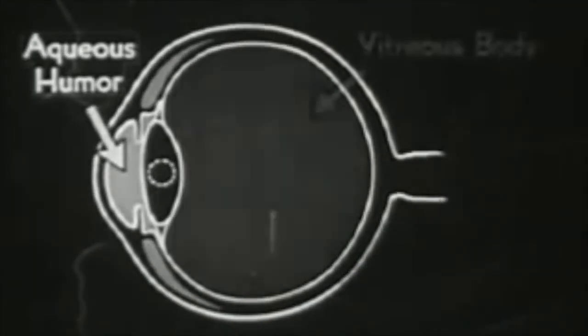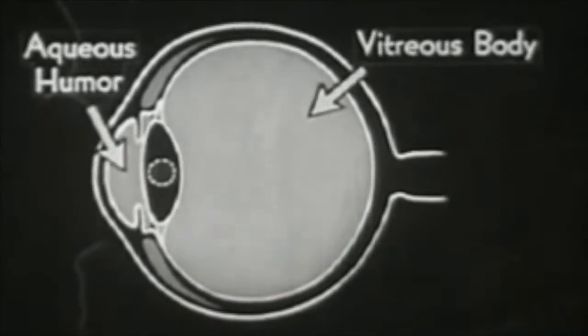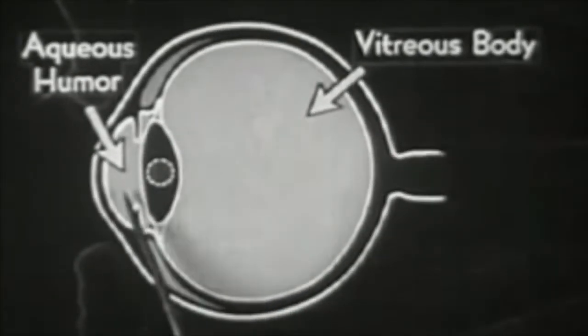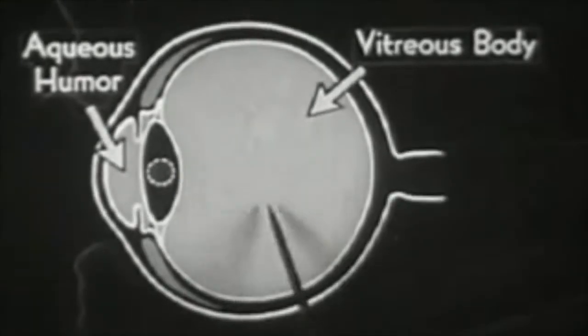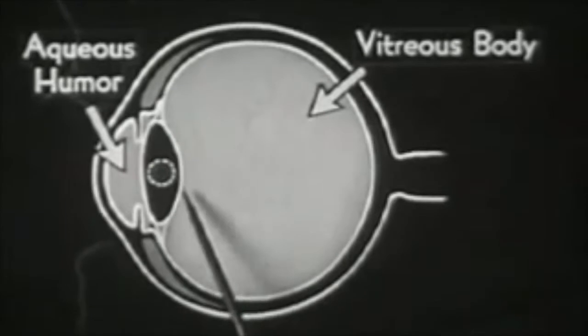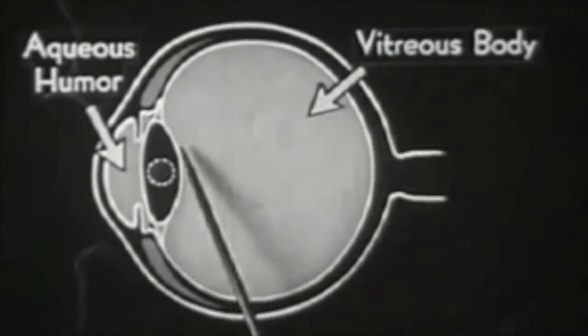The lens itself lies between two liquids. These liquids can exert pressure—liquids cannot be compressed. You may ask then, how is this soft pliable body of the lens made to take on the different degrees of convexity necessary for accommodation?